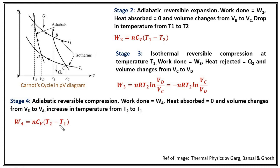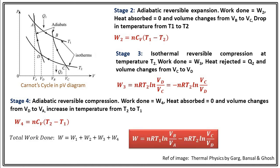Now the question is: what is the total work done during a single cycle? To calculate efficiency we must know the work done during one complete cycle and the heat absorbed. Work done during one complete cycle is W1 plus W2 plus W3 plus W4. Looking at the expressions, W2 is the negative of W4, so these two cancel out, and we simply add W1 with W3.